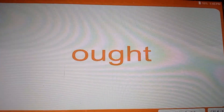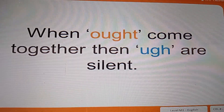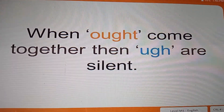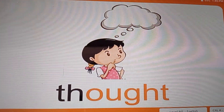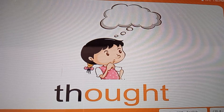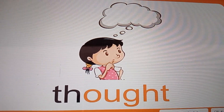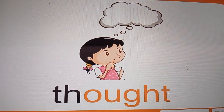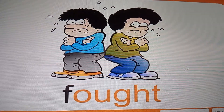Now let us read some more words where letter sounds are silent. When O, U, G, H and T come together, then the letter sounds of U, G and H are silent. The word is 'thought'. Here we can hear the letter sound TH — T and H come together to make the TH sound — and then we can hear the sound of letter O, which is 'aw', and then the letter sound T at the end. So the word is 'thought'. Fought. Fought.